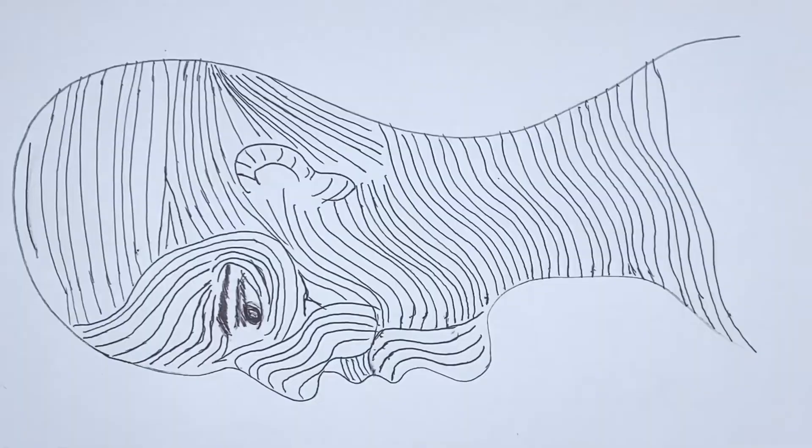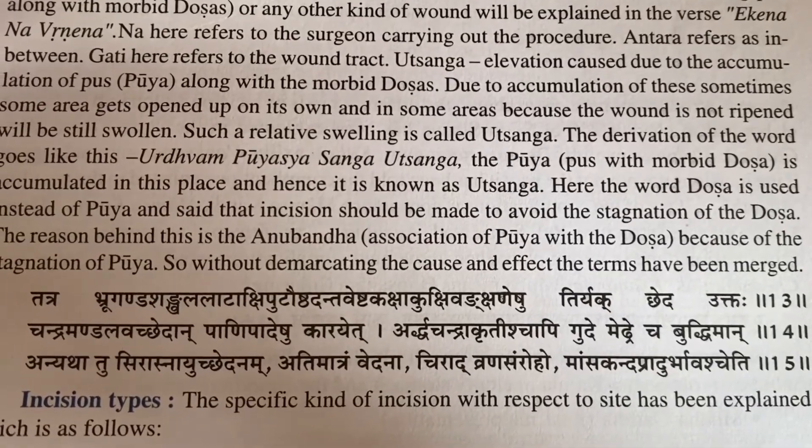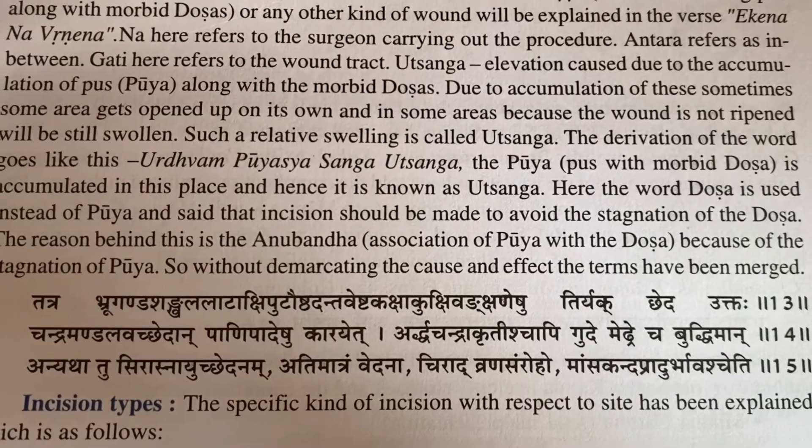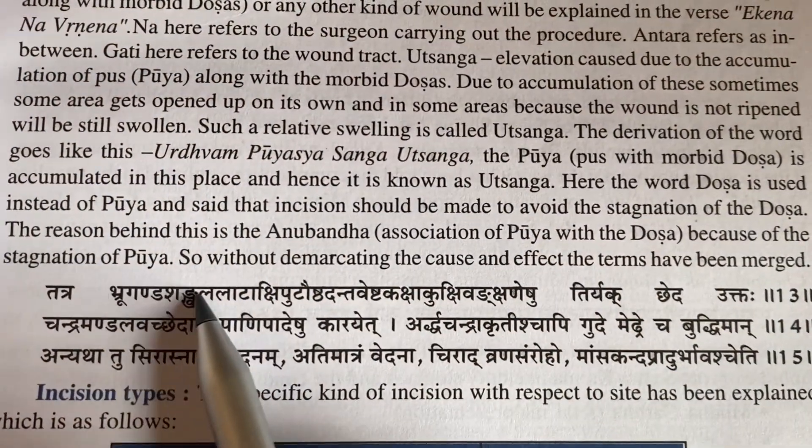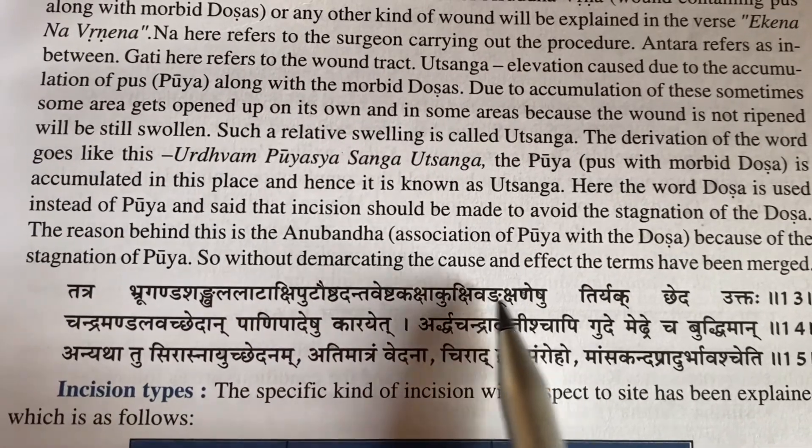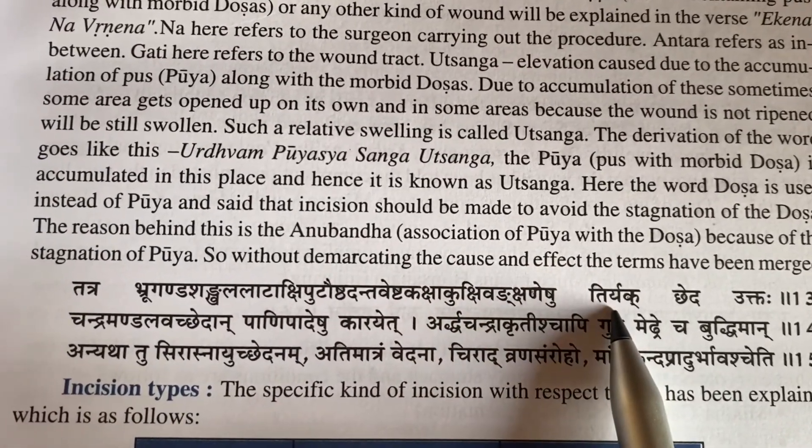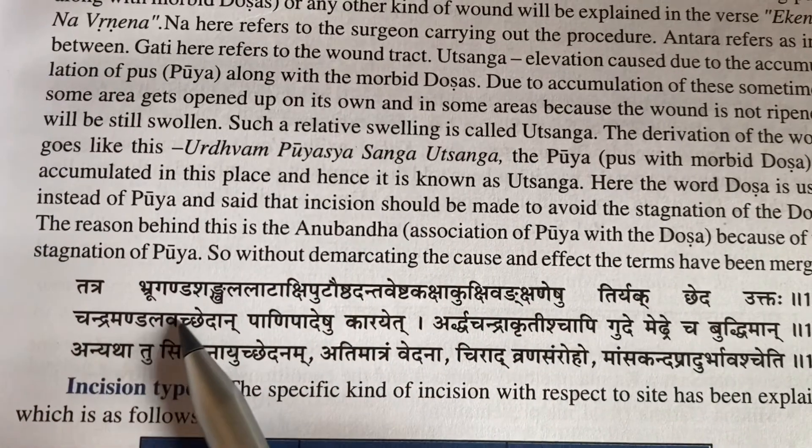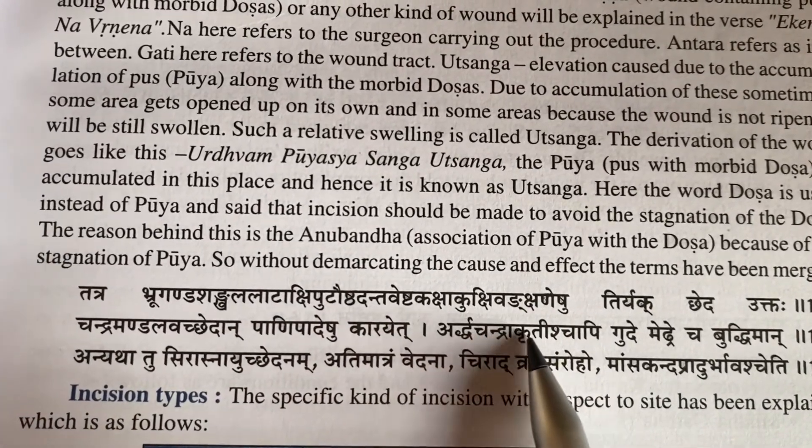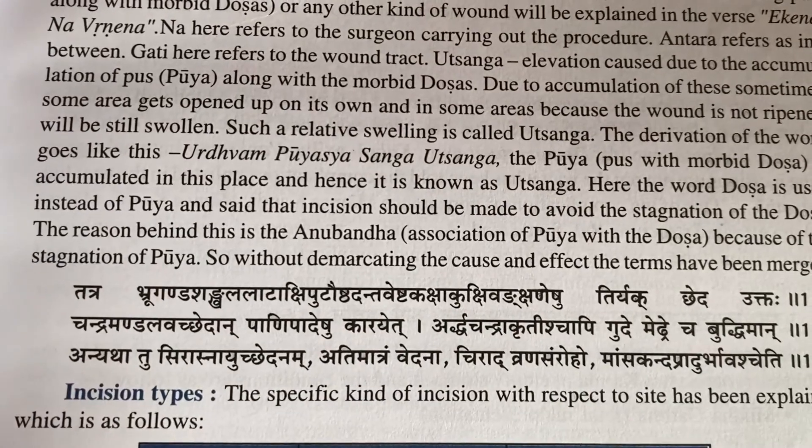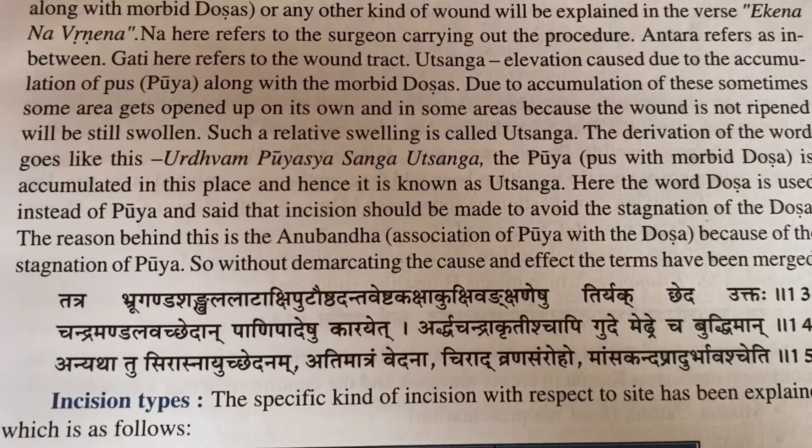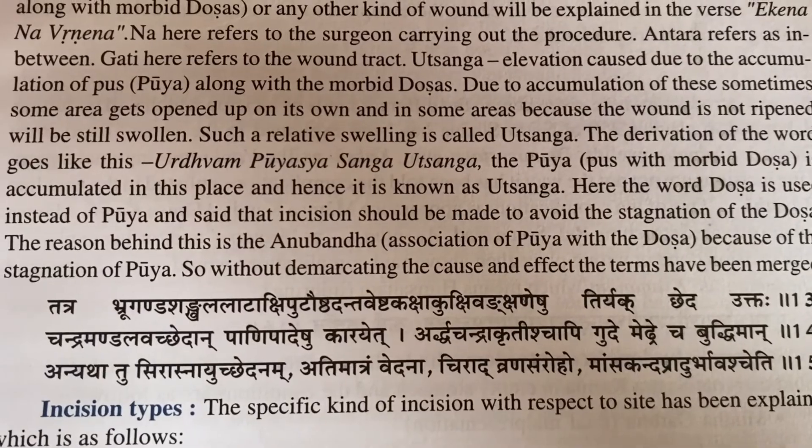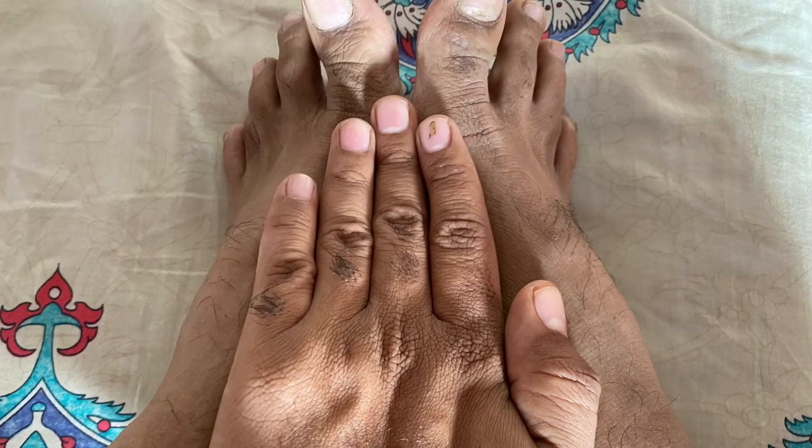In continuation of this, he says in Susruta Sutrasthana fifth chapter, 14th sloka, that respectively in eyebrow, cheek, forehead, eyelids, lips, armpit, abdomen, and pelvic regions, you have to take Tiryak Chedha, means oblique incision.